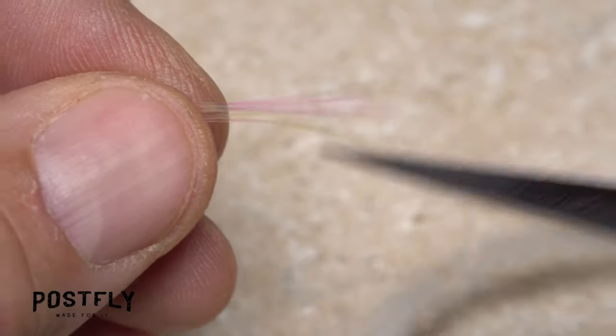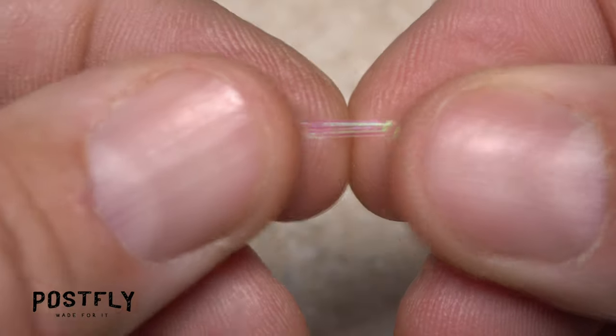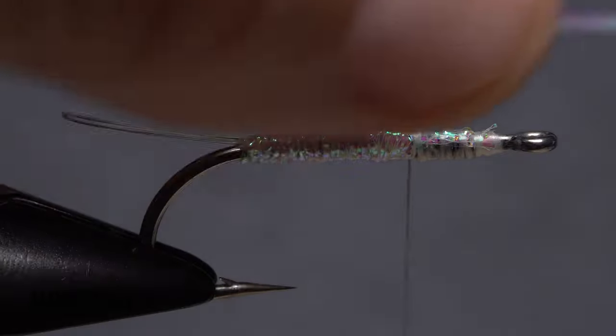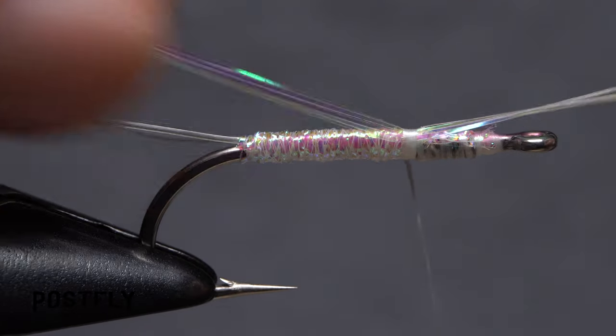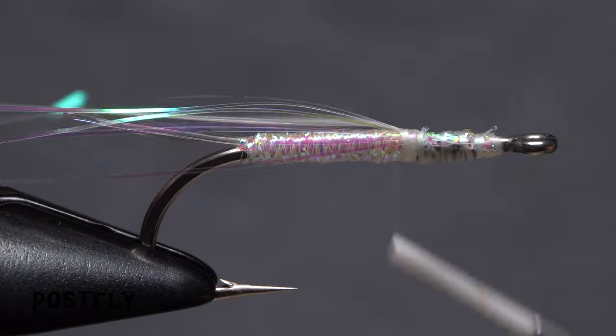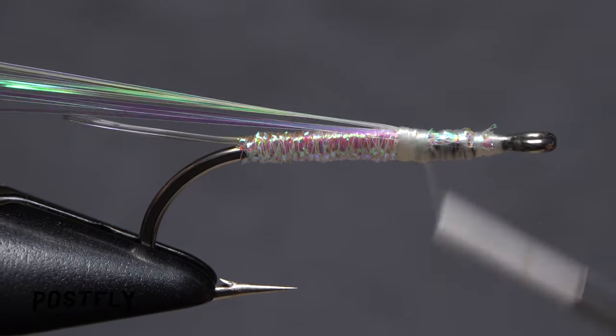Fine Flashaboo adds lifelike shimmer and movement to the pattern. Snip five or so strands free from the hank then locate their approximate midpoint. Secure the midpoint to the hook at the location of your tying thread, then pull the forward pointing portion of the material back to both secure and double the amount of flash. Make sure the slippery material is bound down really well.